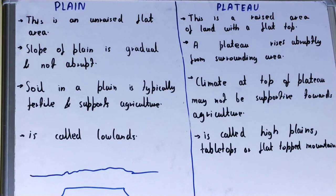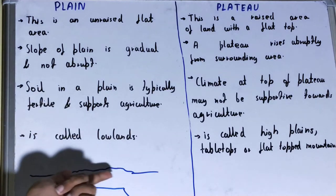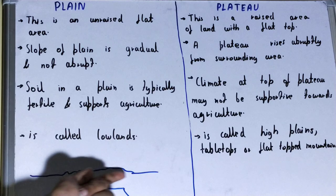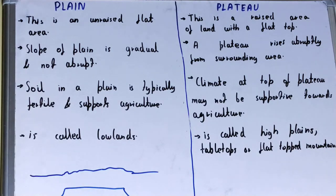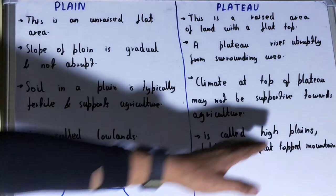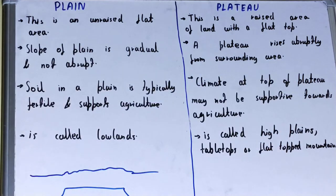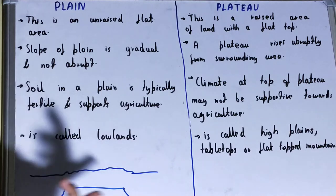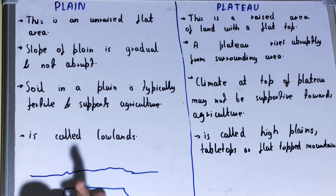Next, if we talk about the plane, the soil in a plane is typically fertile and supports agriculture. The soil that belongs to the plane area is typically fertile as well as it supports agriculture. But if we talk about the plateau, the climate at the top of a plateau may not be supportive towards agriculture.